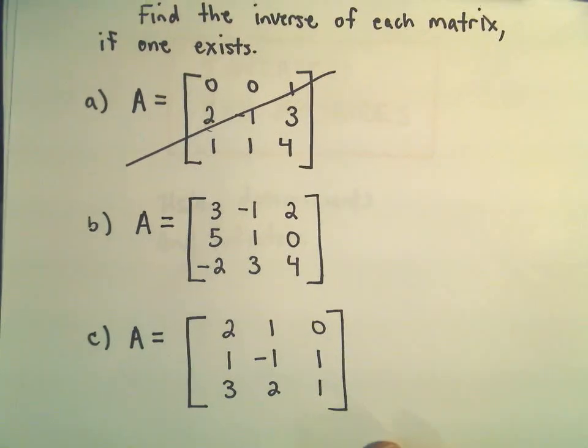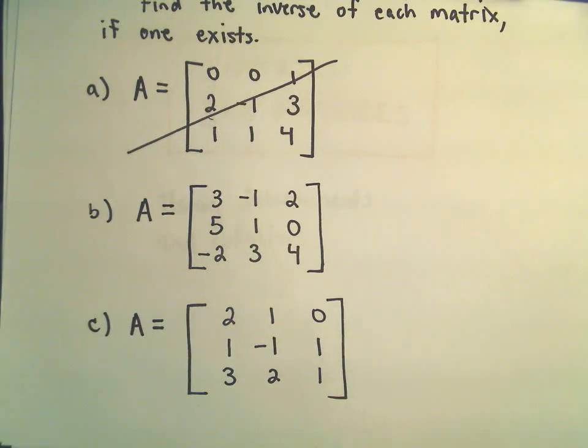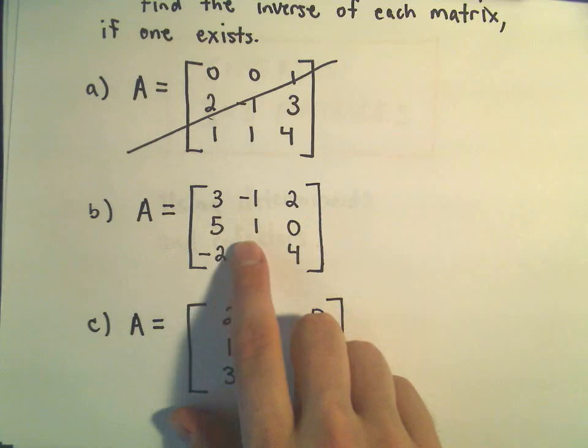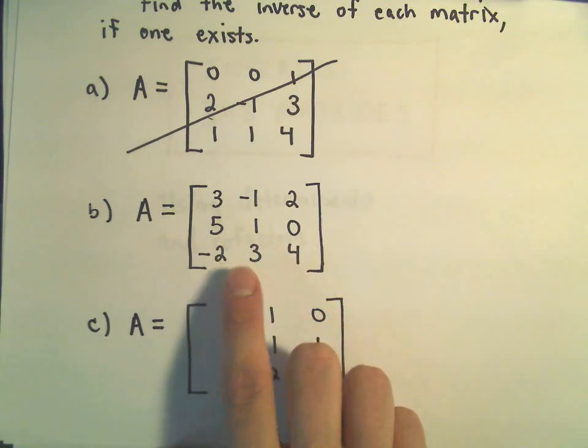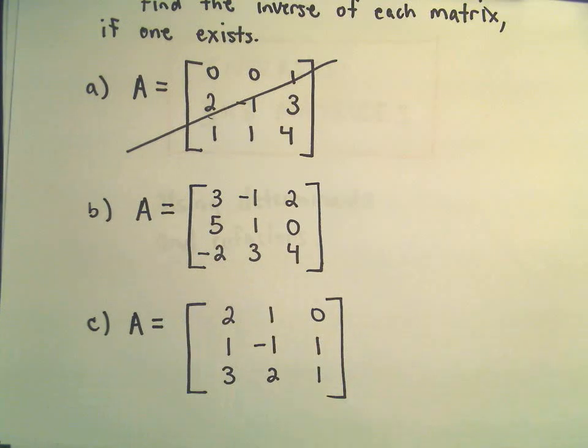We're going to find the inverse of this matrix: 3, negative 1, 2, 5, 1, 0, negative 2, 3, 4.